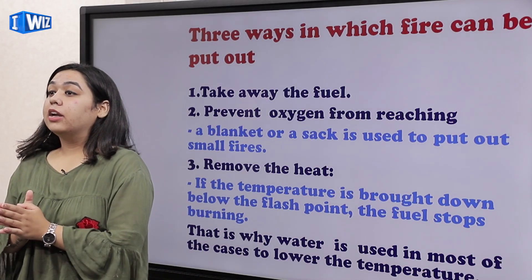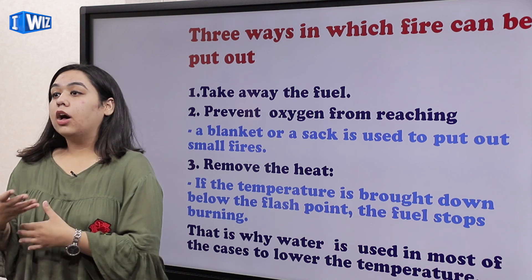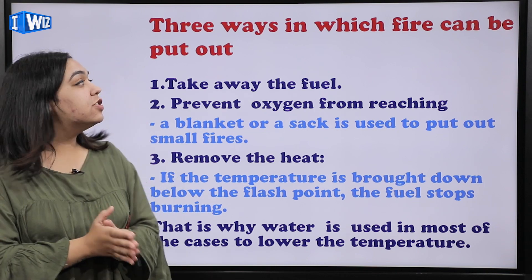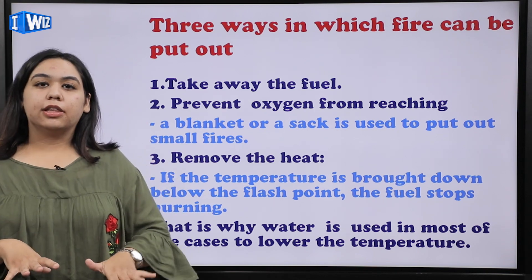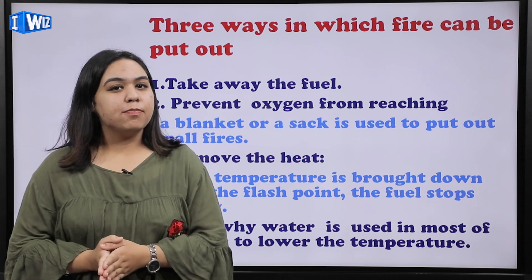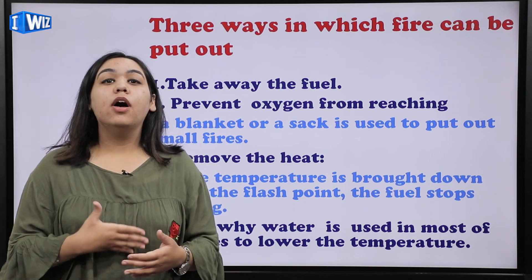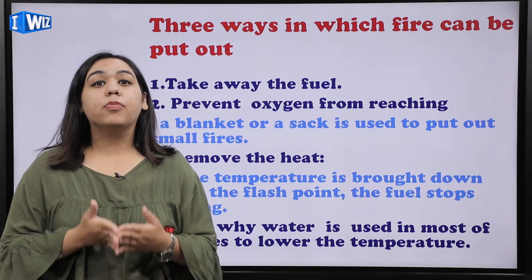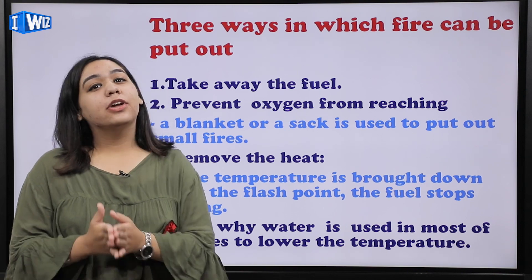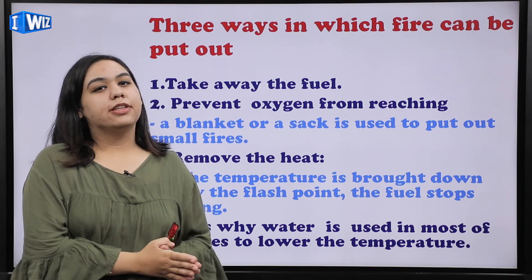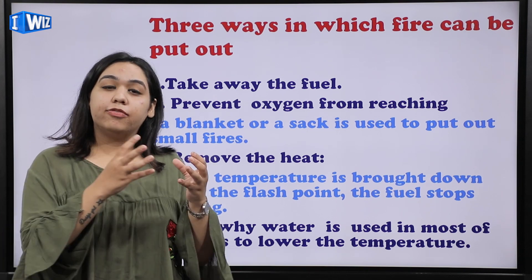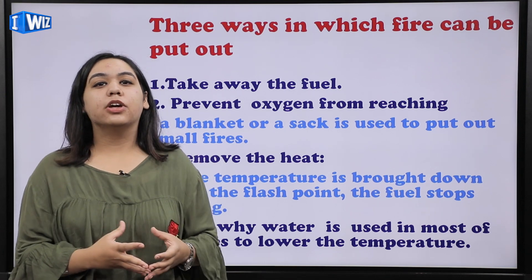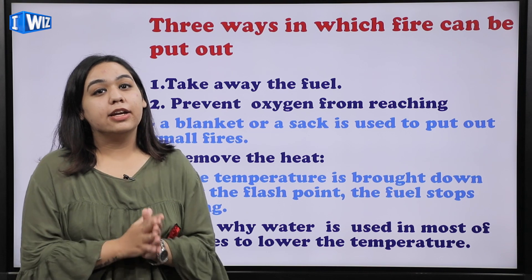Now we've read about three ways to make fire happen. So now we'll be talking about three ways in which fire can be put out. We've discussed three things that are useful for making fire. So similarly, the three things that help put out fire — it is as simple as removing those three things. If you remove the absence of even one of them, fire will not be there and it can be easily put out.